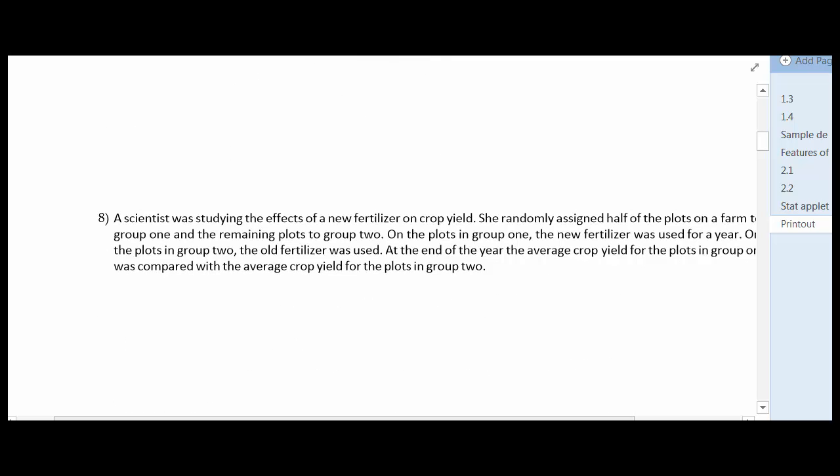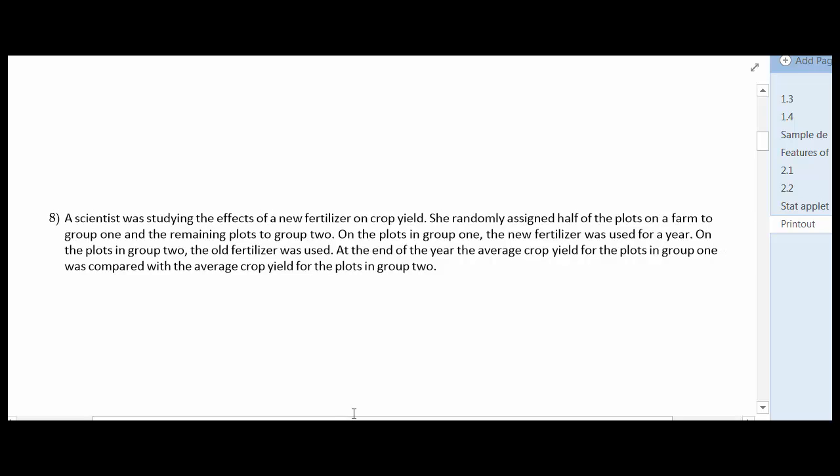Number eight, scientists studying the effects of new fertilizer on crop yields. She randomly assigned half of plots on the farm to group one and the remaining to group two. On the plots in group one, the new fertilizers. So now she's putting fertilizer on something. So she's actually changing something, applying what's called a treatment. So this is clearly an experiment of some type.